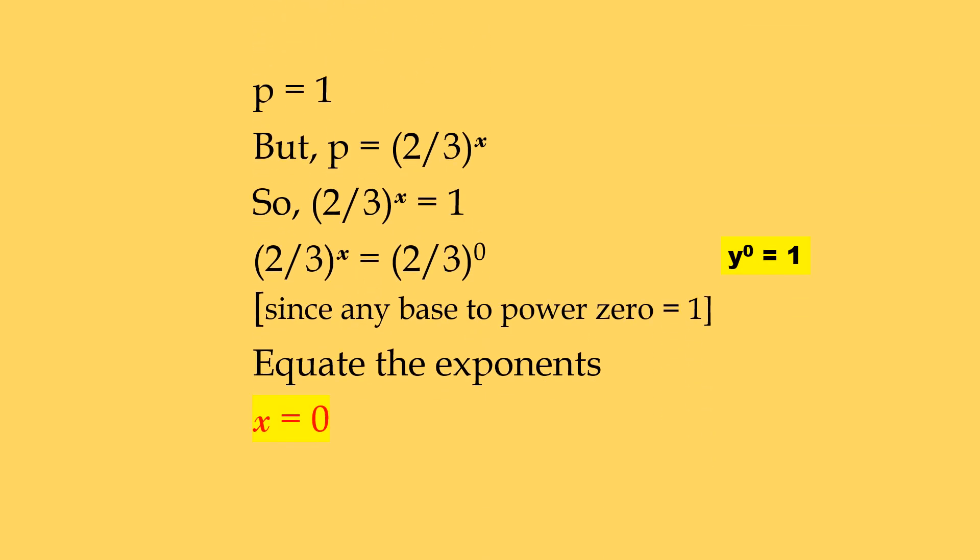We have got p equal to 1. But p was used to represent x power of 2 by 3. So 2 by 3 power x is 1, right as 2 to 3 to power 0. Equate the exponents, and we get x equal to 0.